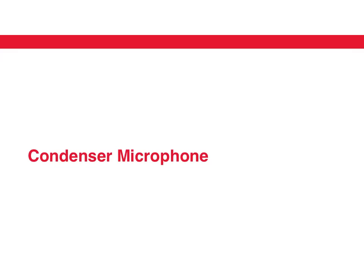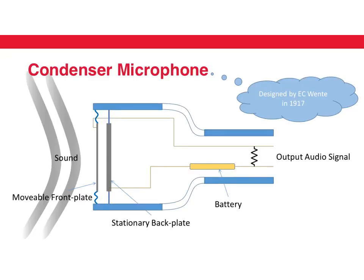A good example of a capacitive sensor is a condenser microphone. A condenser microphone takes audio signals, which is essentially air pressure variations, and converts it into a voltage output. A condenser microphone essentially consists of a pair of conducting plates as shown here.